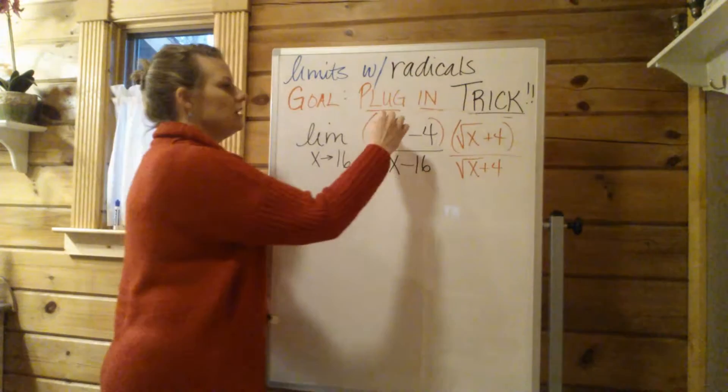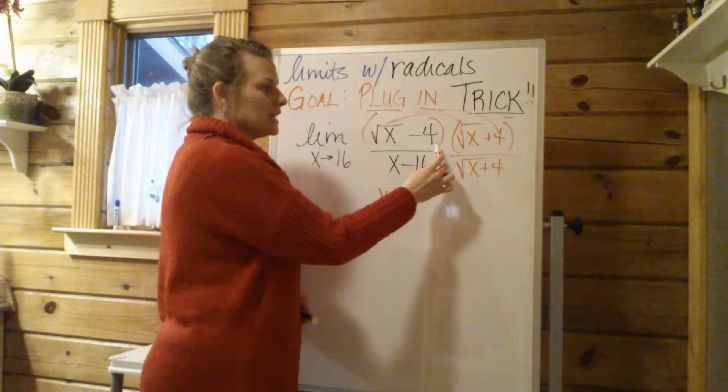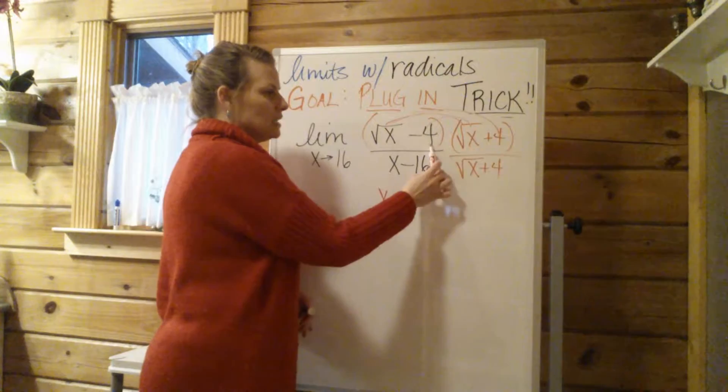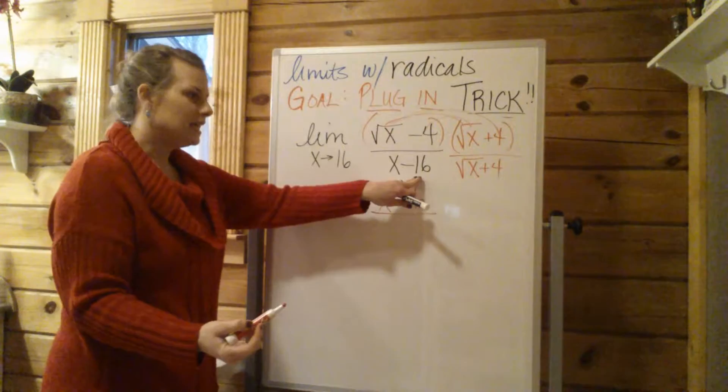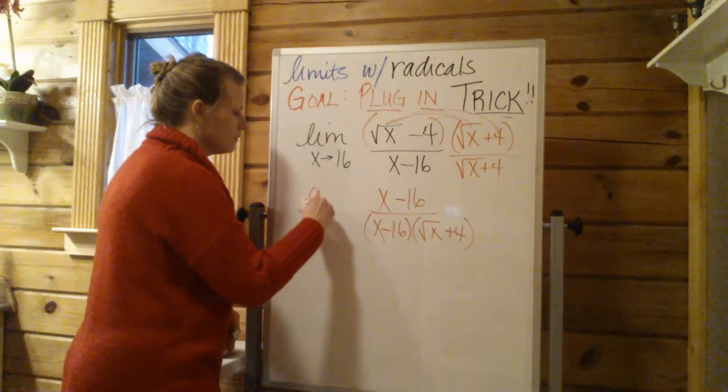Now, up top, when I do the foiling, square root of x times square root of x just gives me x. On the outside, I have plus 4 times the square root of x. Inside, I have minus 4 times the square root of x. Those are always going to cancel. And then last times last, minus 4 times plus 4 is minus 16. Remember on the bottom, keep these separated out. Do not foil because now I have x minus 16 times the square root of x plus 4.